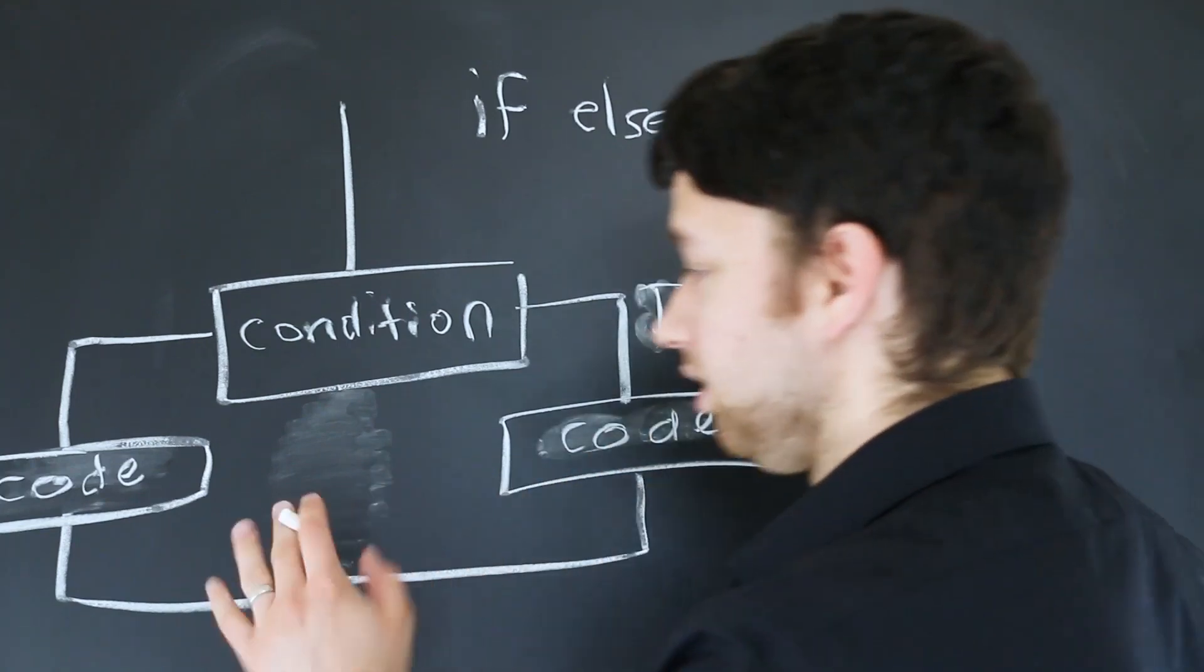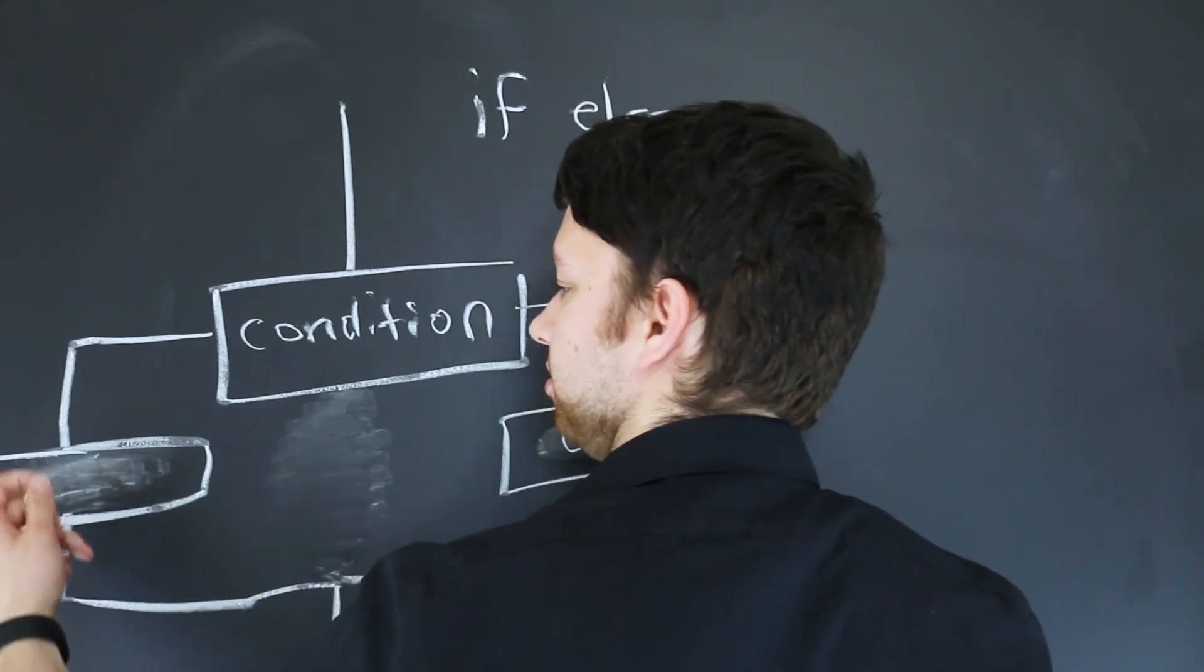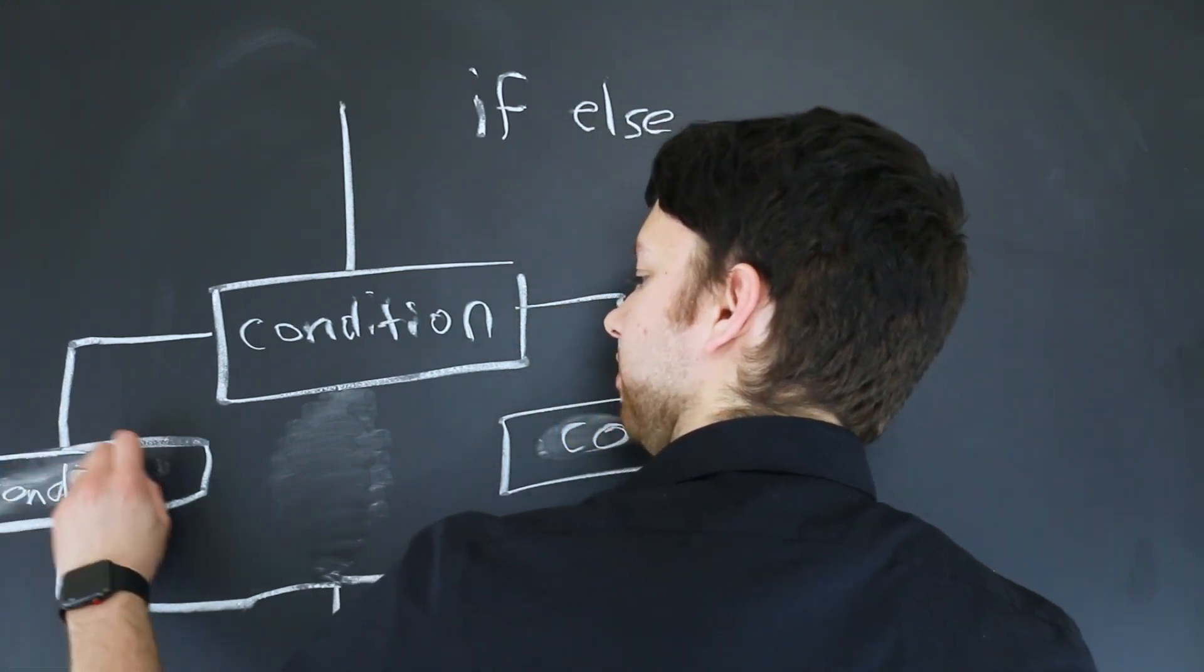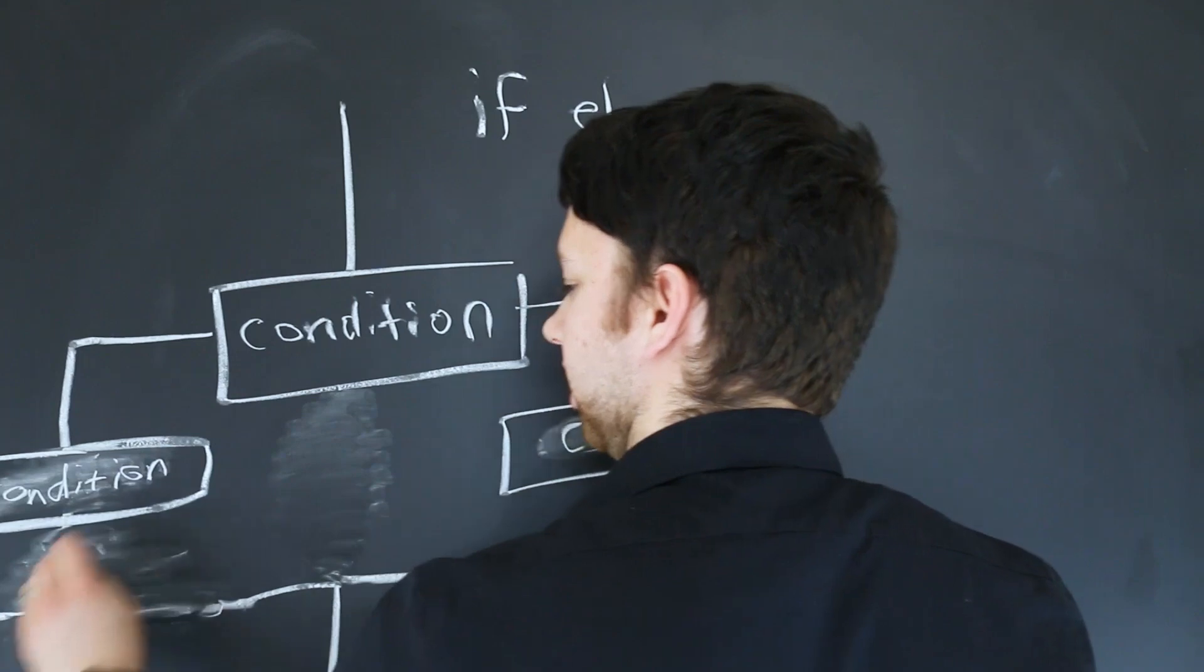The else if is a little bit different. And if I had to structure it this way I'd probably do something like this. Where we have another condition if the first one's false. And then this one can break into true and false.